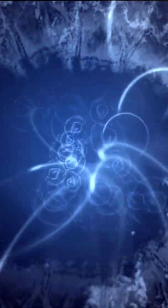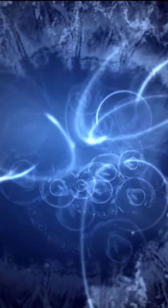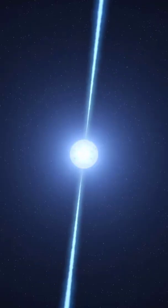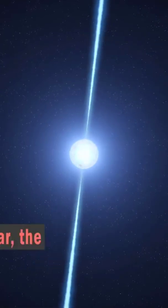Neutron stars are also known for their incredibly fast rotation speed. Some neutron stars can rotate hundreds of times per second, making them among the fastest spinning objects in the universe.